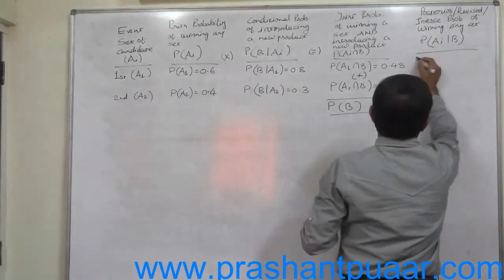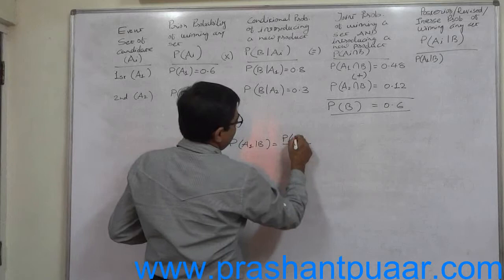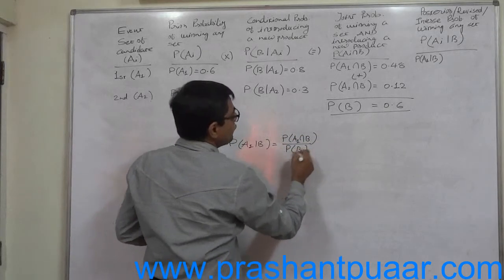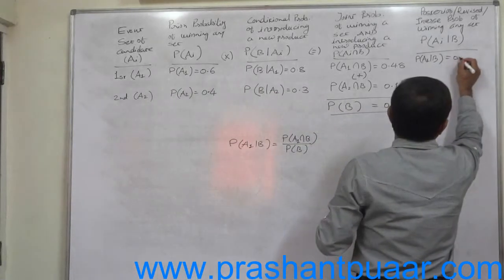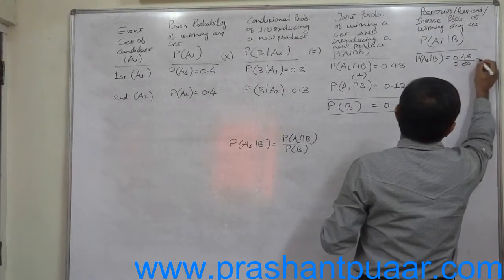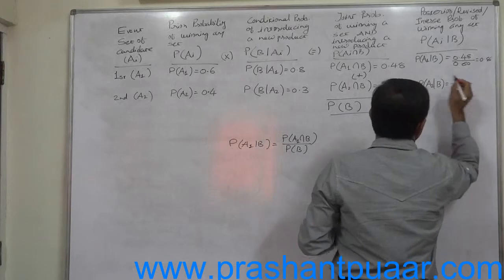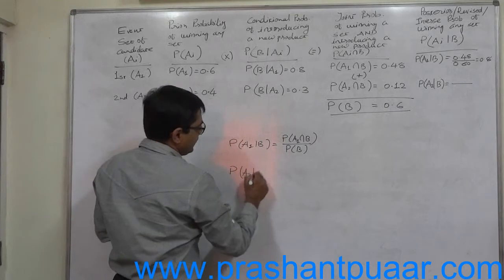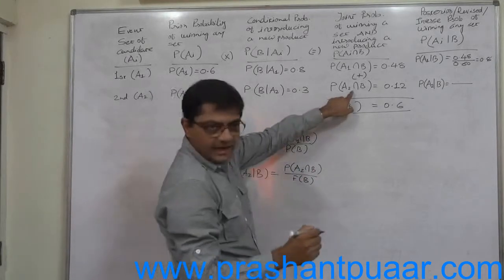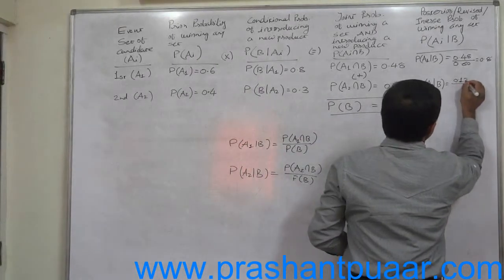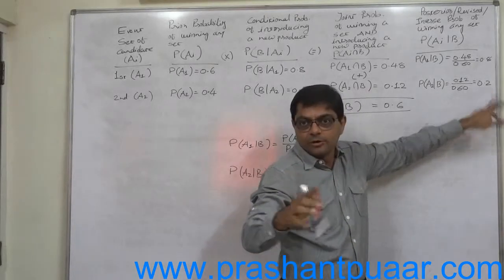What is the formula for P(A1|B)? We know that P(A1|B) = P(A1 ∩ B) / P(B) = 0.48 / 0.6 = 0.8. Similarly, P(A2|B) = P(A2 ∩ B) / P(B) = 0.12 / 0.6 = 0.2. Note that the summation of these posterior probabilities is again 1, because there are only two sets.